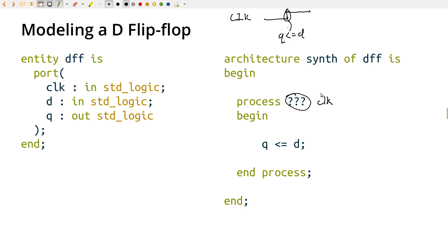And because D is not in the sensitivity list, D can go up and down any time, and Q is not going to get updated. Q is only going to get updated when we have a change in the clock, which is exactly the behavior of the flip-flop.